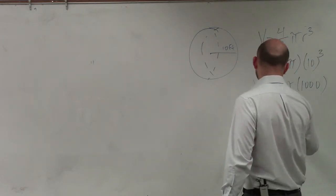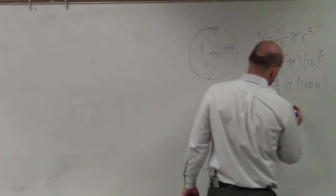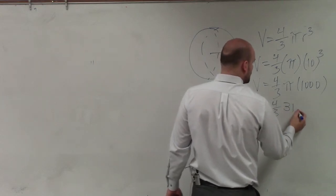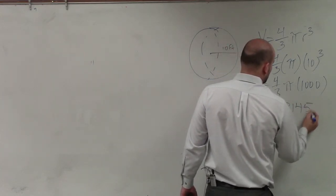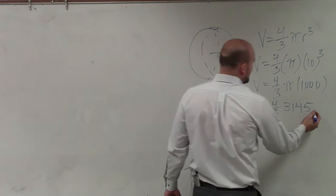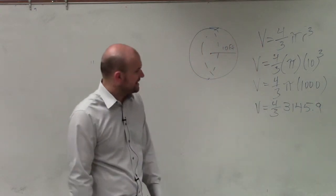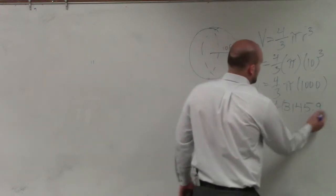So therefore, I have volume equals 4/3 times 3,145.9. And I don't know the remaining digits of pi.